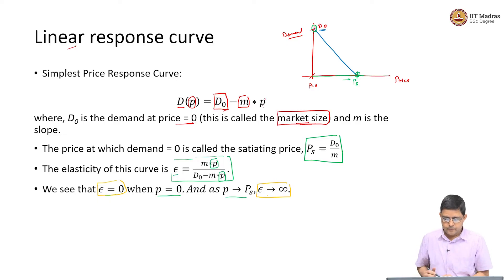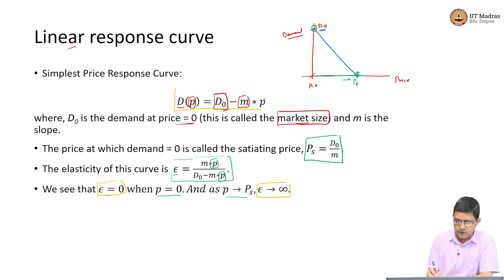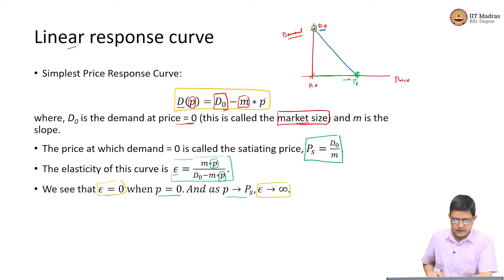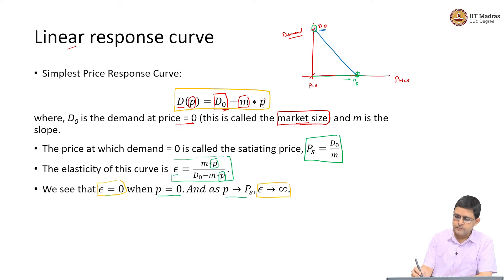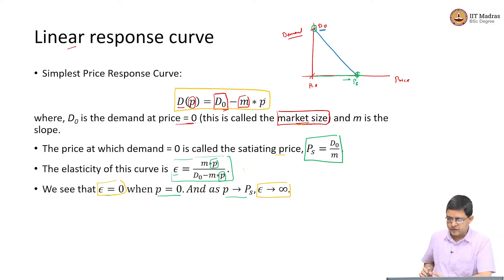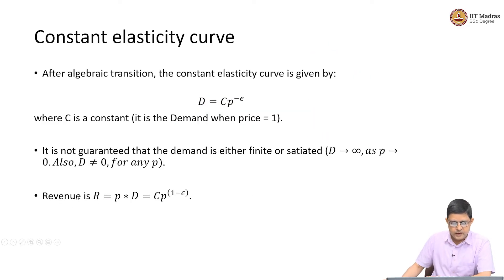This is a linear demand response curve — a straight line, downward sloping, positive, continuous and differentiable. The relationship between price and demand does not always have to be linear. There is another curve called the constant elasticity curve, where we want to keep the elasticity constant rather than having it change from 0 to infinity.